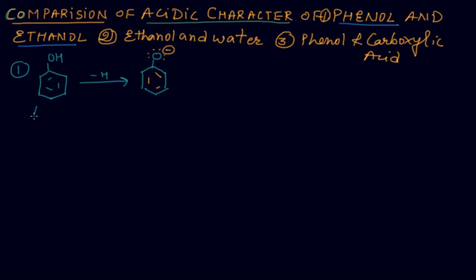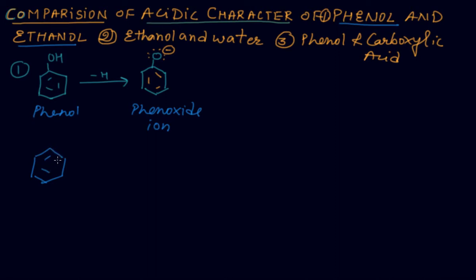Whenever we release the hydrogen ion from phenol, we get the phenoxide ion, which is resonantly stable, so phenol is more acidic in nature. We can understand its acidic character on the basis of its resonating structures. When phenoxide breaks its bond from hydrogen, three lone pairs are available on oxygen.